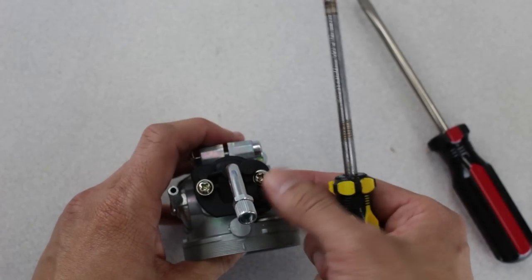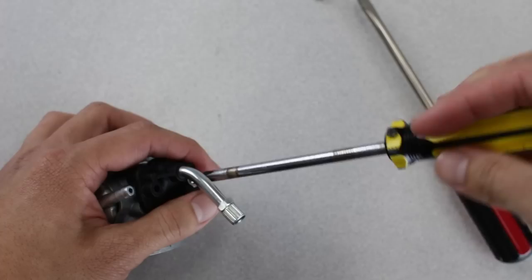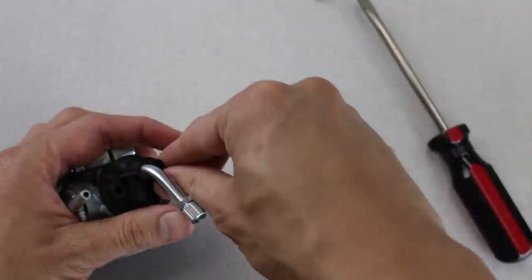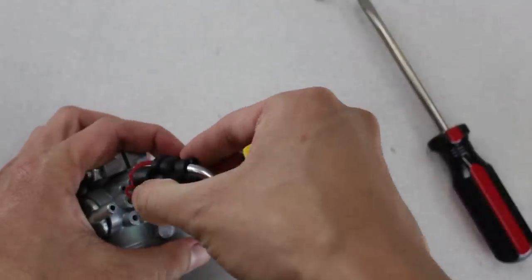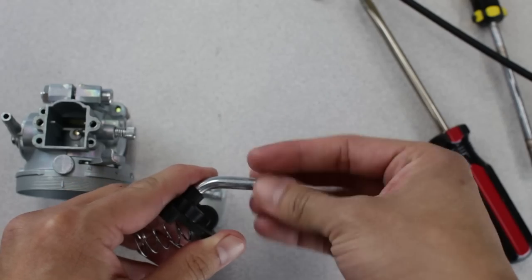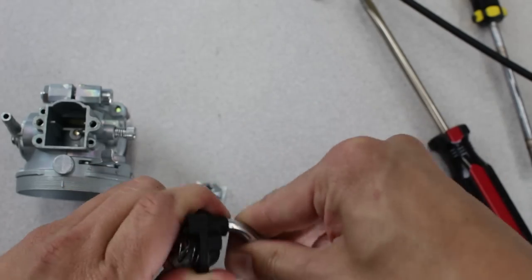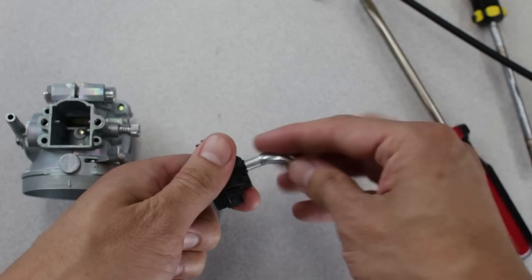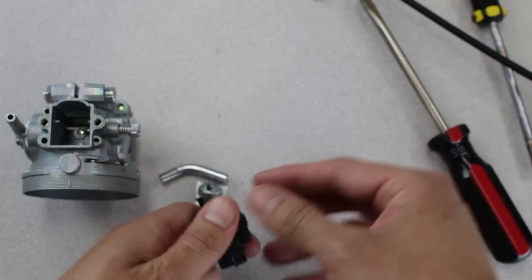Next use the phillips to remove the screws that are on top of the carb. As you remove the last screw be careful about the contents popping out because of the spring inside. Remove the metal elbow on top of the carb. There's a good chance we won't be needing this, especially if you're using a standard size throttle cable.